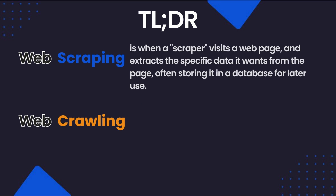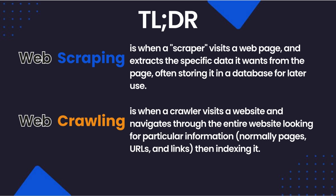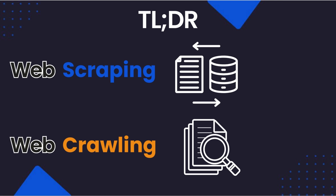Web scraping is when a scraper visits a web page and extracts the specific data it wants from the page, often storing it in a database for later use. Web crawling, on the other hand, is when a crawler visits a website and navigates through the entire website looking for particular information — normally pages, URLs, and links — and then indexing it. In short, web scraping is about extracting data, whereas web crawling is focused on discovery.